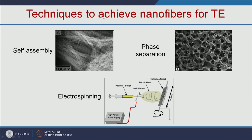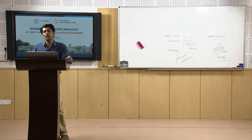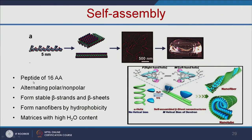Three techniques are available to achieve nanofibers for tissue engineering: self-assembly, phase separation, and electrospinning. In self-assembly, peptides with a hydrophilic head and hydrophobic tail self-assemble to form a three-dimensional scaffold. Using peptides of 16 amino acids or more with alternating polar and non-polar residues, stable beta strands and beta sheets form nanofibers with good hydrophobicity and hydrophilicity, creating a 3D nanofiber scaffold.